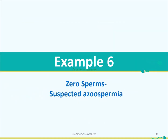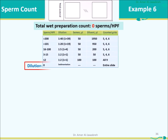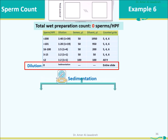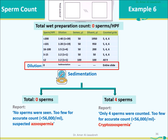Cryptozoospermia. Example 6 — Zero sperms, suspected azoospermia. Wet preps show no sperms. Perform sedimentation and screen the entire slide. If still no sperms are seen, report: 'No sperms seen. Too few for accurate count. Less than 56 thousand per mL. Suspected azoospermia.' If a few sperms are seen (e.g., 4), report: 'Only 4 sperms were counted. Too few for accurate count. Less than 56 thousand per mL. Cryptozoospermia.'